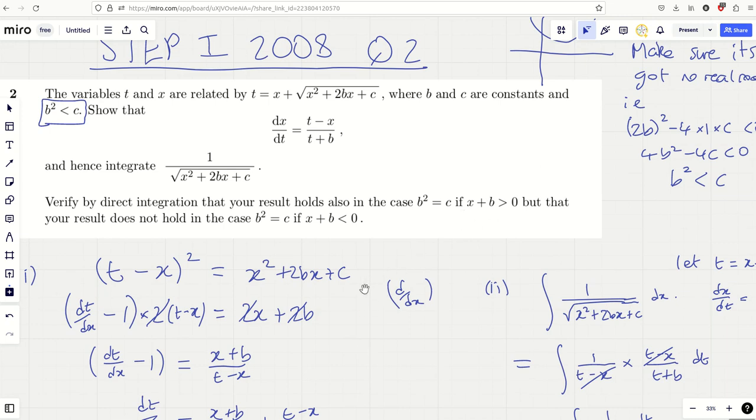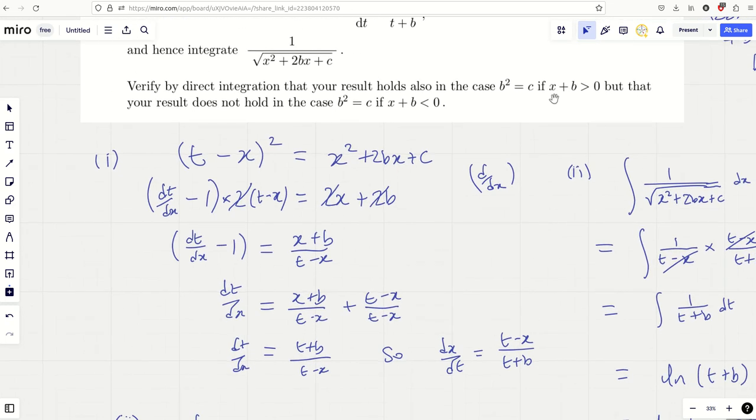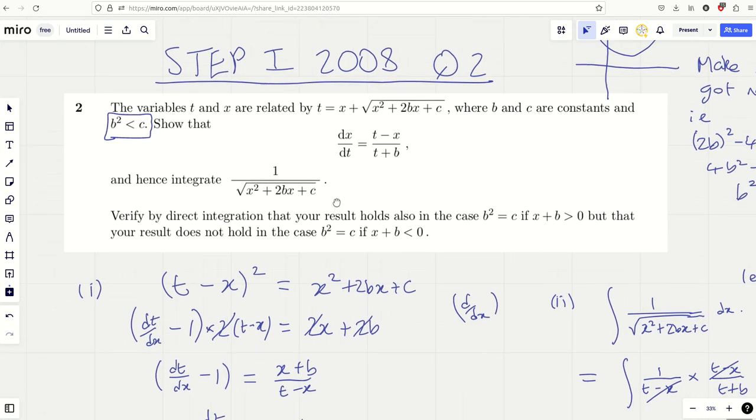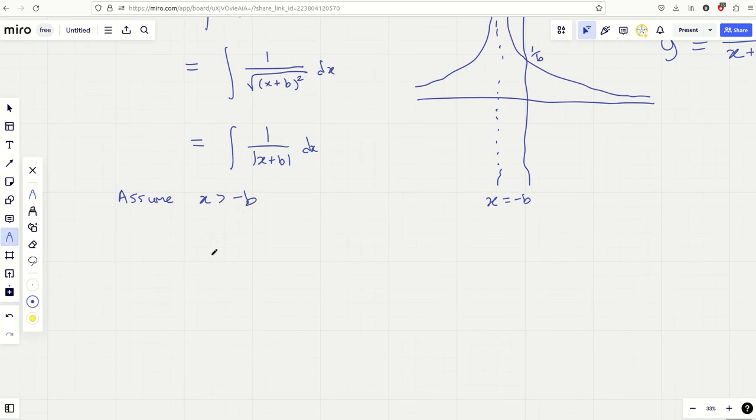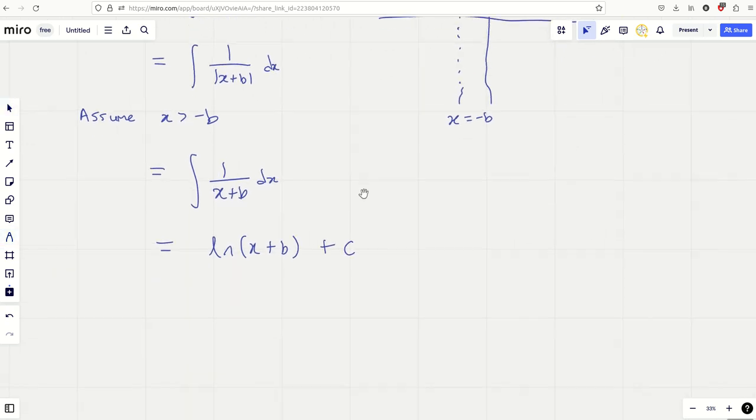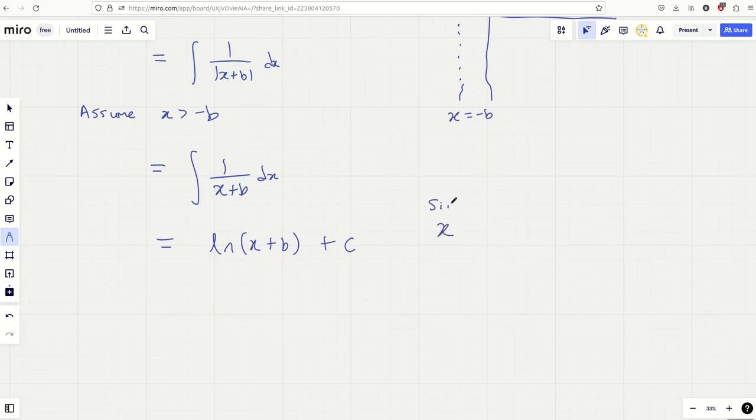But yeah, if this is the case, and it will verify that this result holds, because we're going to verify by direct integration that our previous result holds. Okay. Assume x is greater than minus b. Then we're simply integrating 1 over x plus b dx. Okay, well, that is the same as ln of x plus b plus a constant c. And that looks absolutely fine. Since x plus b is greater than 0, we are fine.